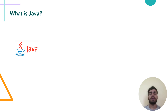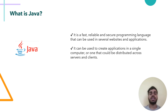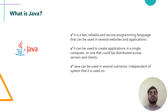The first thing — what exactly is Java? Java is a fast, reliable and secure programming language that can be used in several websites and applications. It can be used to create applications on a single computer or ones that could be distributed across servers and clients. Java can be used in several scenarios, independent of the system that it is used on.